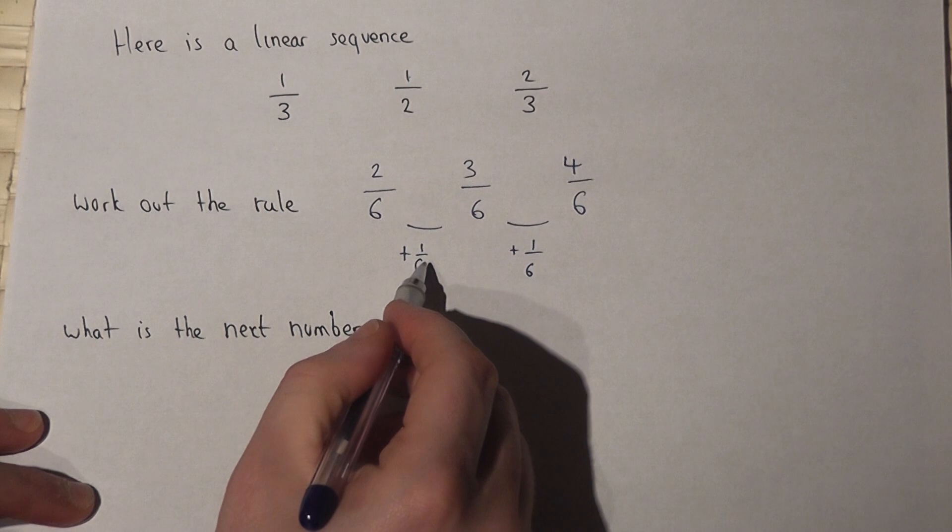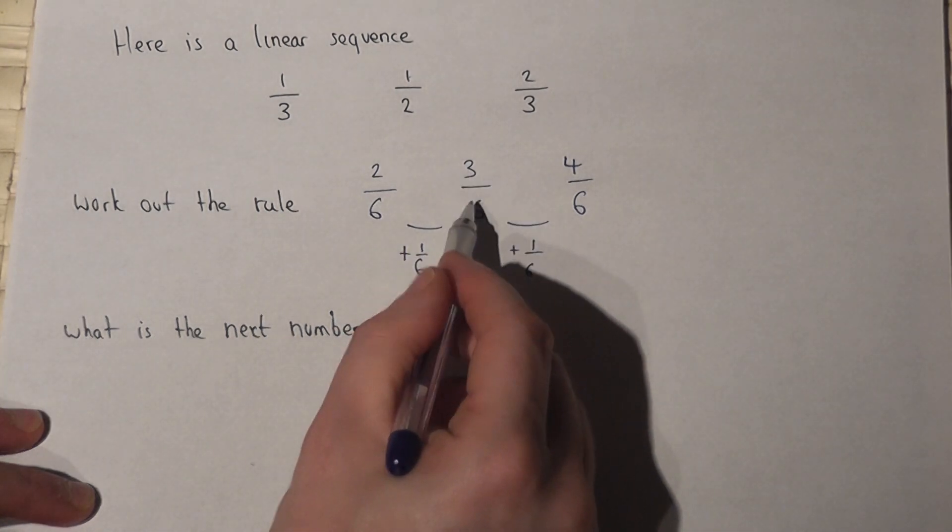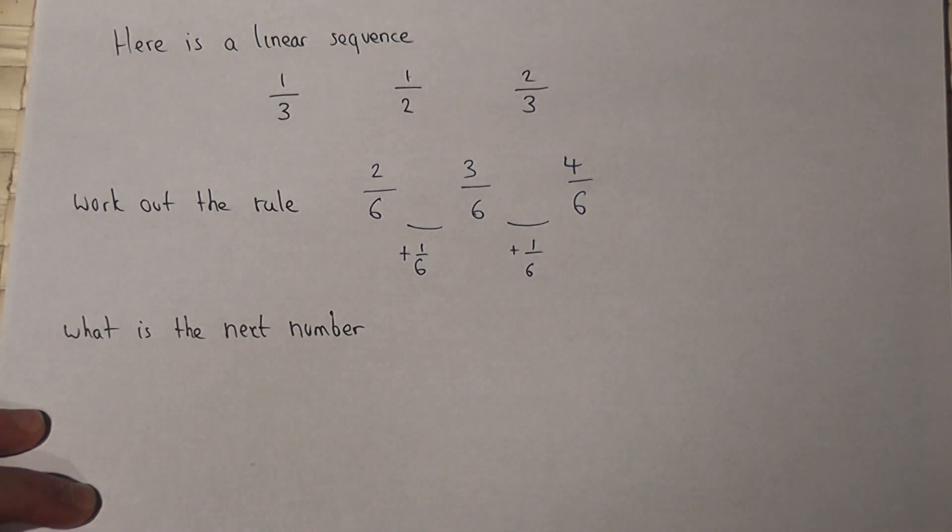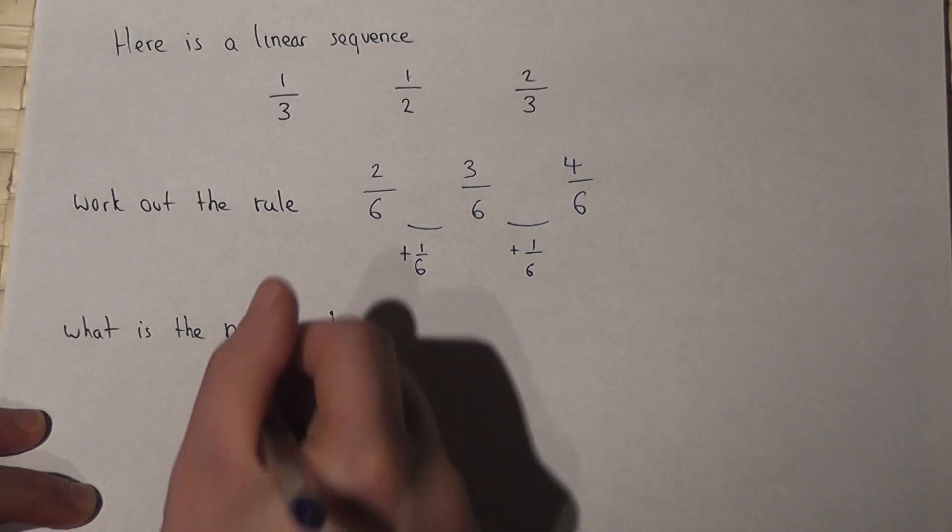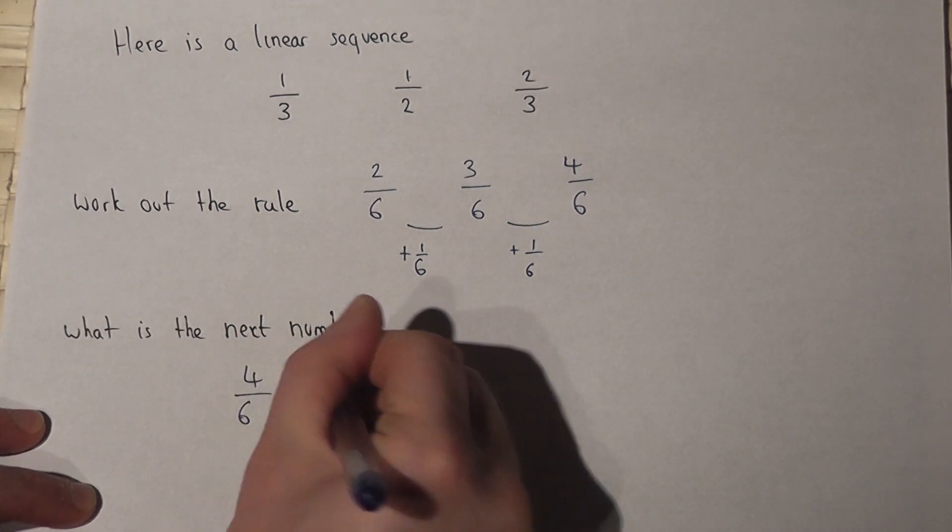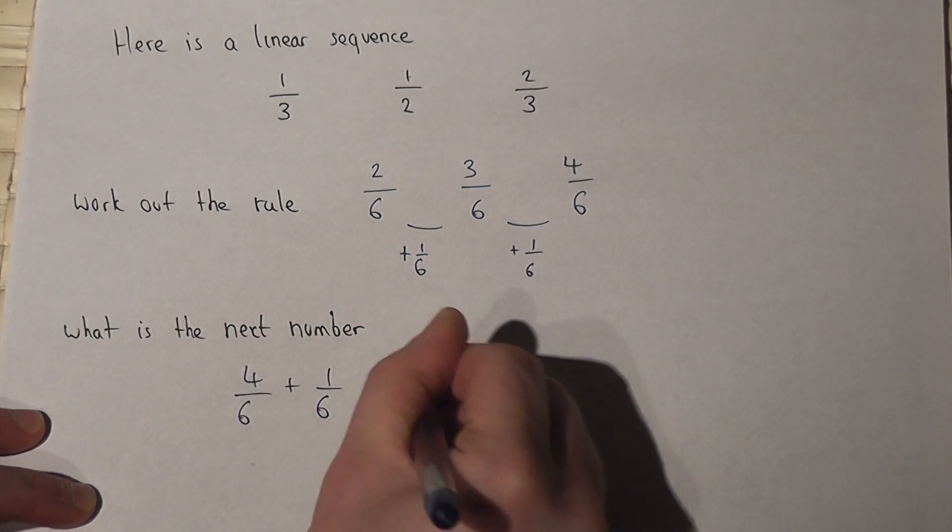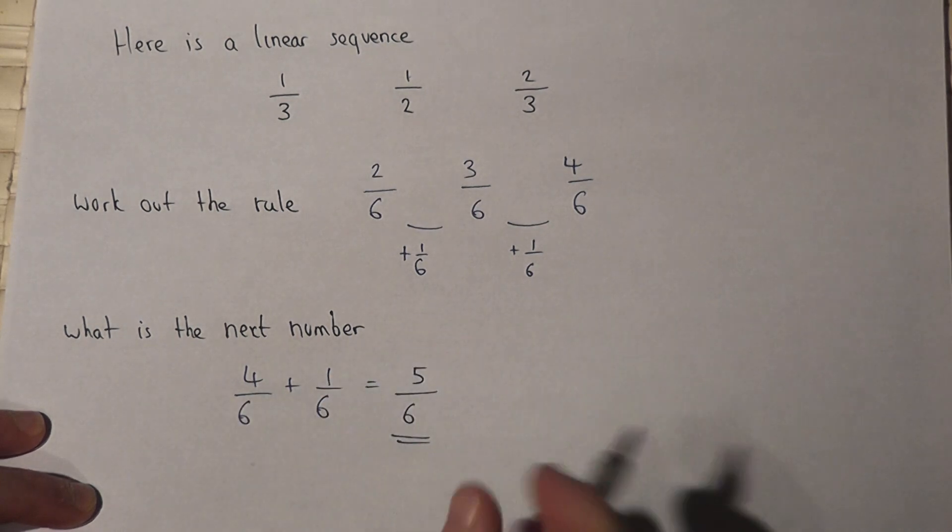2/6 plus 1/6 is 3/6. 3/6 plus 1/6 is 4/6. So the next term is 4/6 plus 1/6, which equals 5/6, and so on and so forth.